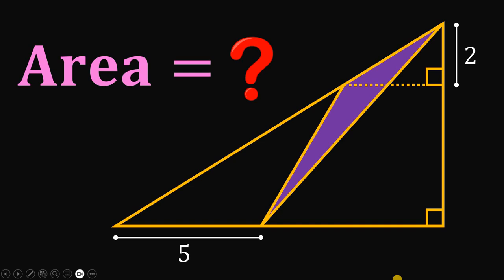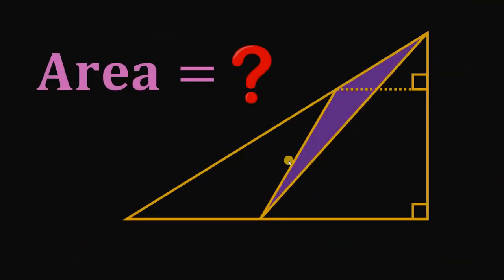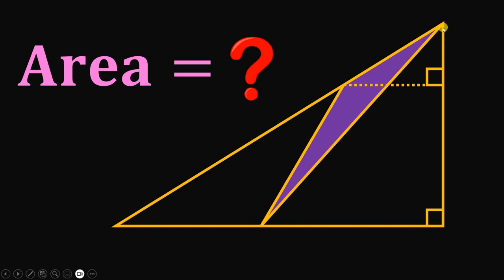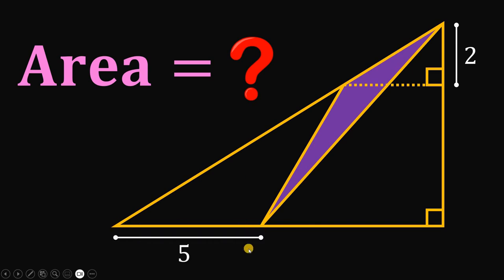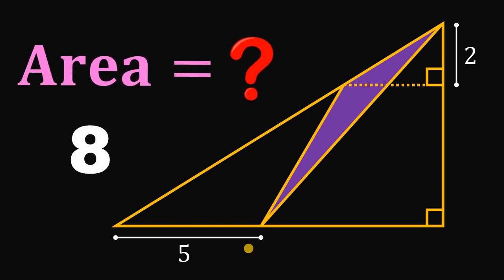Can you solve this geometry challenge? Here's the question. Given this right triangle, this side right here must be equal to 2 units, and the distance from the tip of this right triangle to this point must be equal to 5 units. Our goal is to find the area of the shaded region. You can pause this video if you want to give this problem a try.